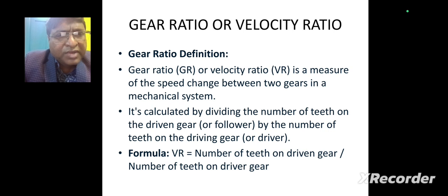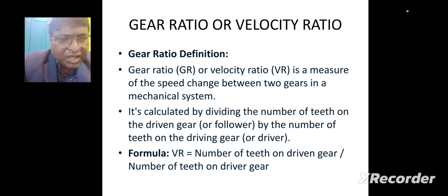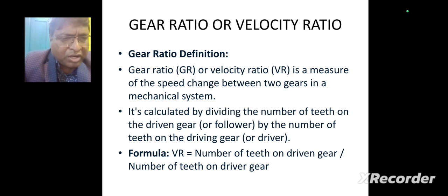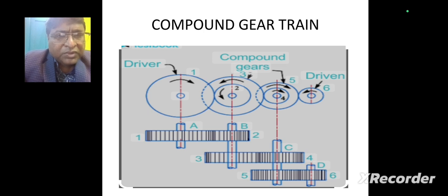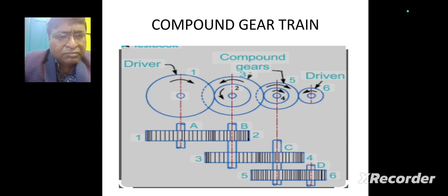What do we mean by gear ratio and velocity ratio? It is very important for transmitting power. The velocity ratio is a measure of speed change between two gears in a mechanical system. It is calculated by dividing the number of teeth on the driven gear (follower) by the number of teeth on the driving gear (driver). In a compound gear train, the velocity ratio is the speed of the last driven gear to the speed of the first driver gear.